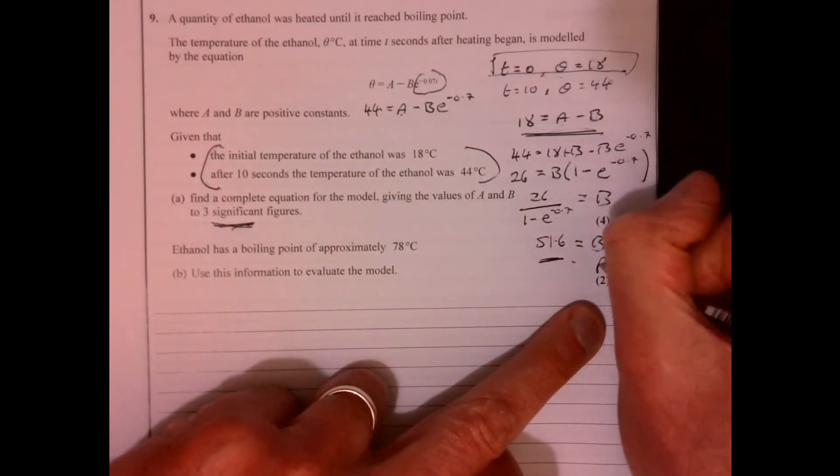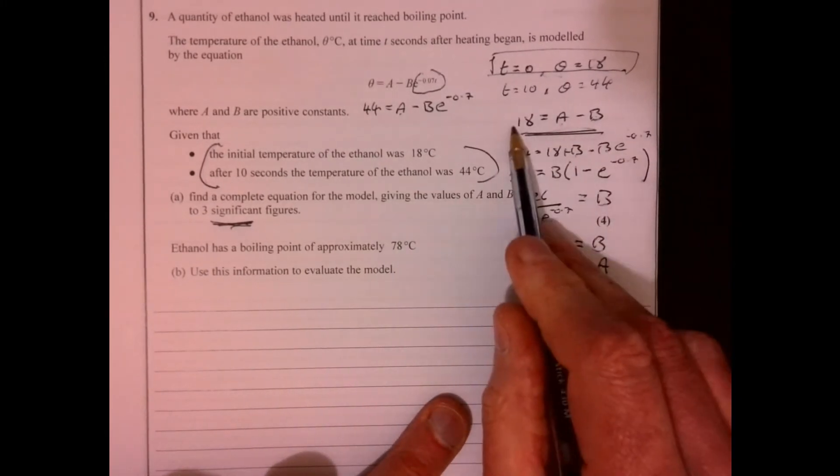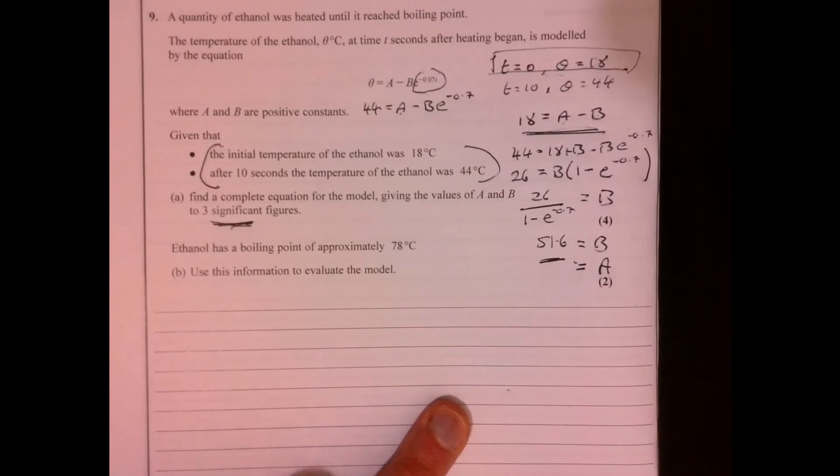And then A, that's an easy one, because remember, A is equal to 18 plus B. So if you just add 18 to that, and then that's 69.6.